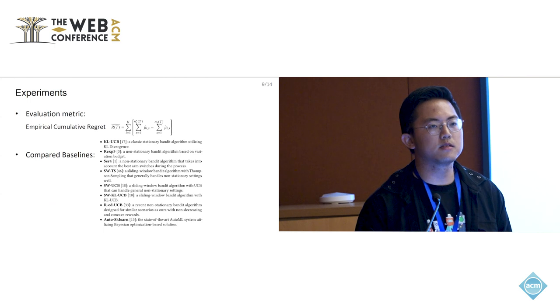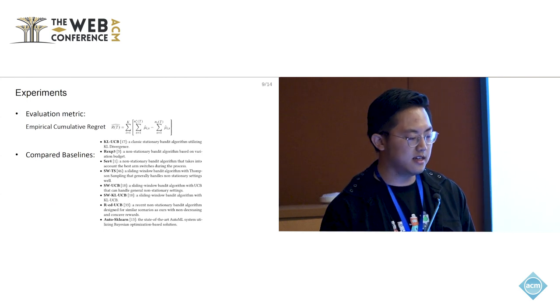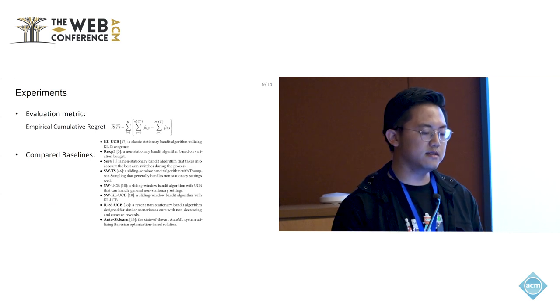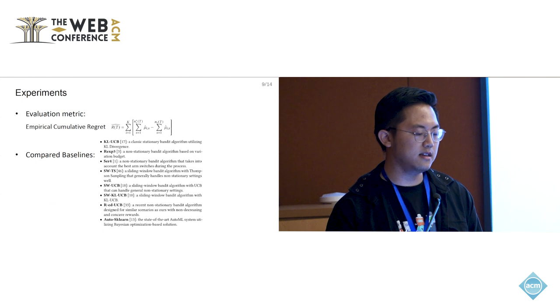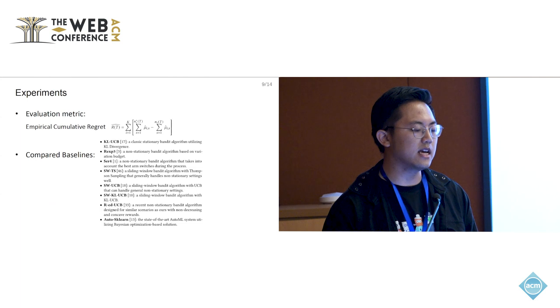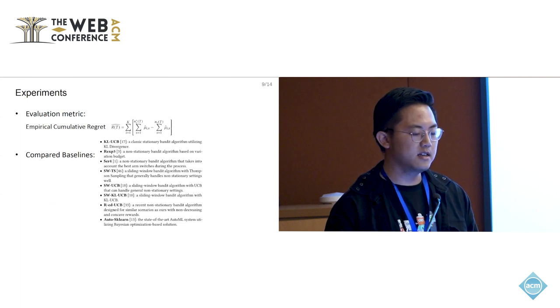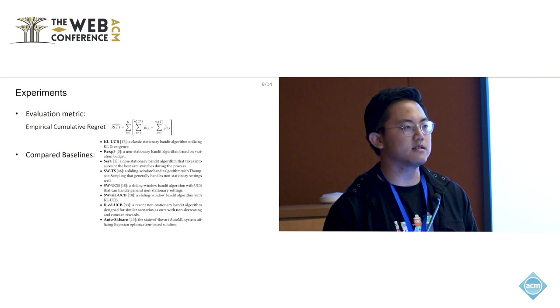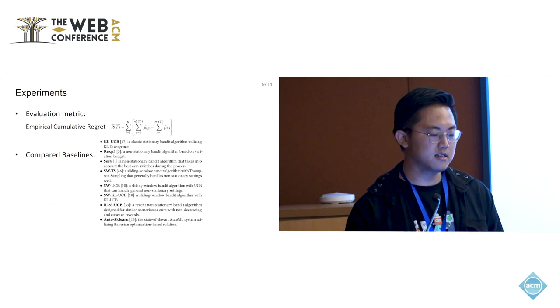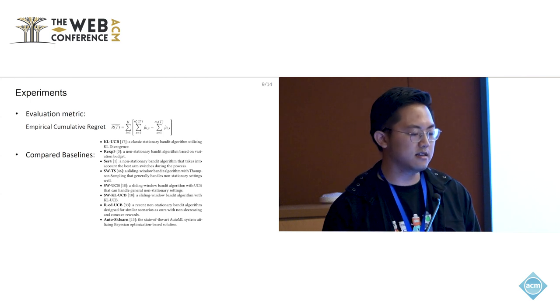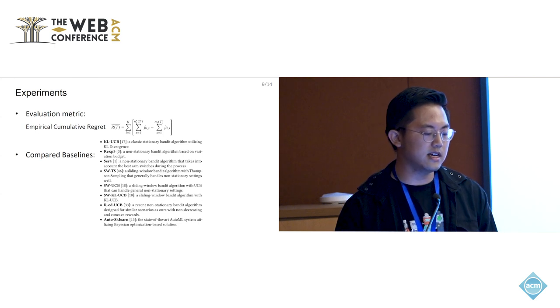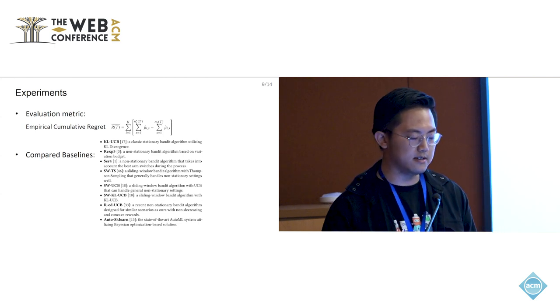In our experiments, we mainly used empirical cumulative regrets as our evaluation metric. The regret definition is, intuitively speaking, there is an optimal action sequence where each time we select the best arm and we get the rewards. We compare them to our actual arm selections corresponding to the rewards we get, and we calculate the difference between them. Therefore, the smaller the regret is, the better performance the algorithm is. We compare our algorithm to a set of bandit algorithms and also AutoML methods.